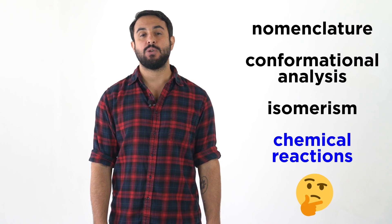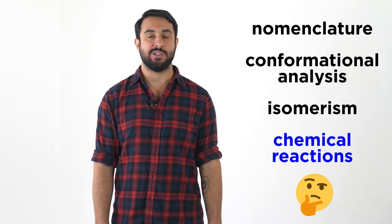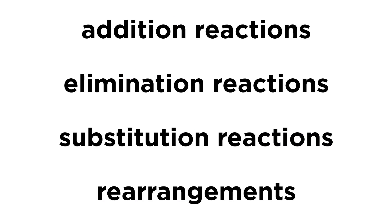Let's go over some of the most common types of organic reactions now. Four general types of reactions we will see over and over again are addition reactions, elimination reactions, substitution reactions, and rearrangements. Let's define each of these right now so that later, when we investigate specific examples with more depth, we will already be clear about what type of reaction we are discussing.